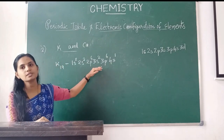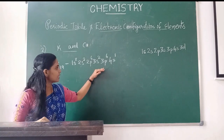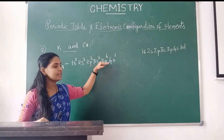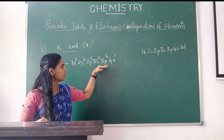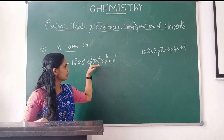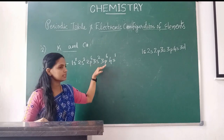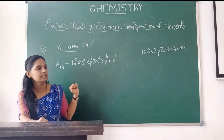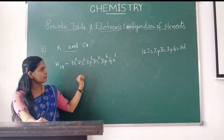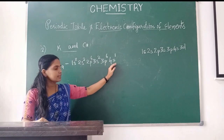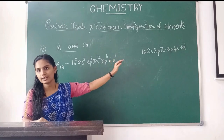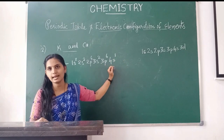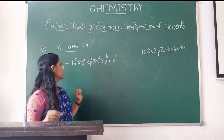That is because the energy of 4s is less than 3d. So after 3p, the electron fills 4s before 3d. That is why 4s has lower energy than 3d.